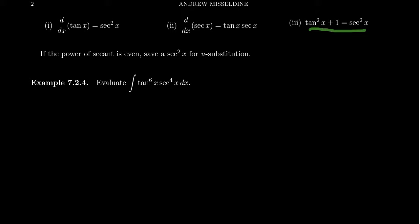One can see this identity by taking the standard sine squared plus cosine squared equals one and dividing everything by cosine squared.